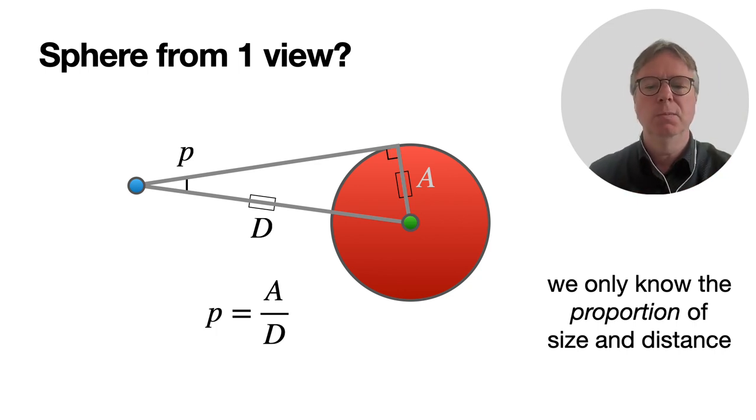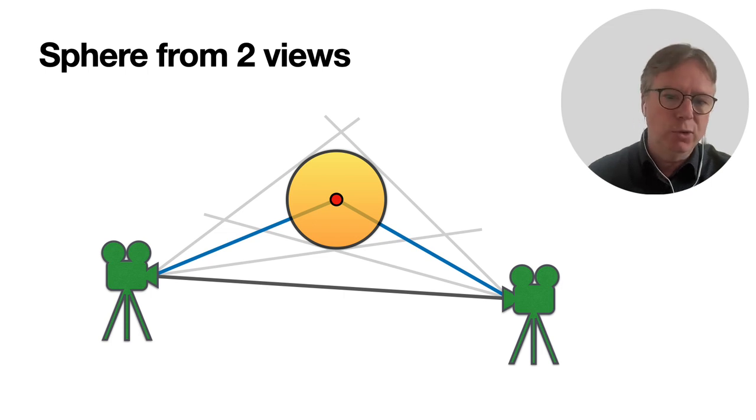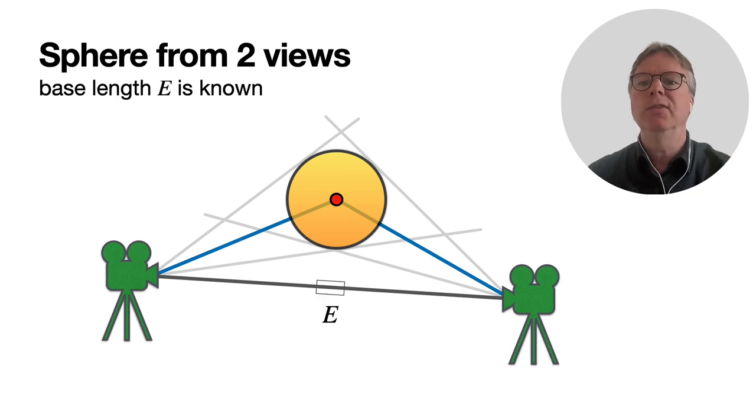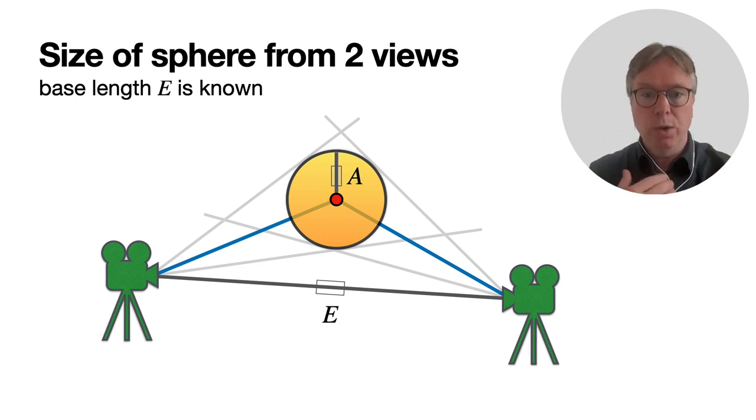But if we take two views of the sphere like this, two cameras or two eyes, then we have two visual cones. I'm going to assume that the base length, so the distance between the cameras or the distance between the eyes, is known. That's our base, and what we want to know is the radius of the sphere expressed in quadrants.